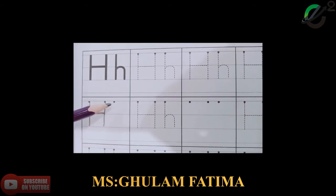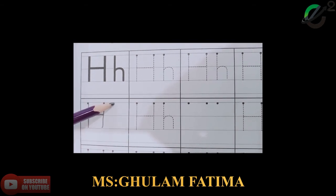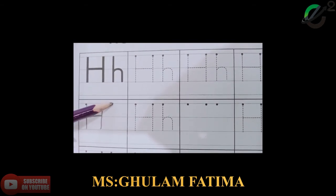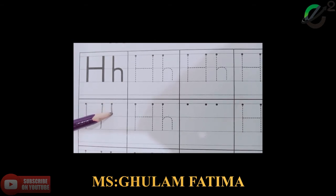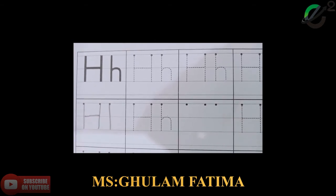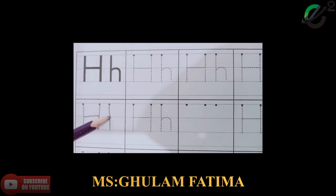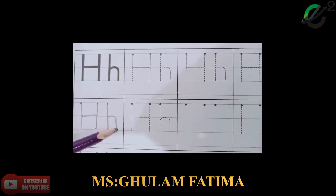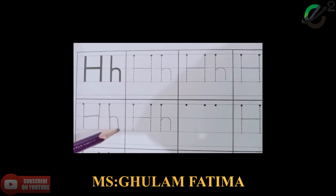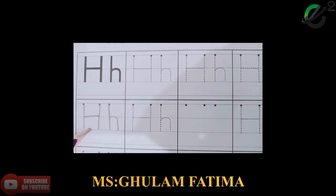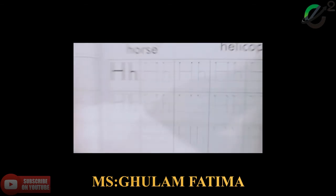Now we will draw small h. On this dot, first of all, starting from the top, make a standing line to the bottom, go to the middle, and make a curve to the bottom. This is small h. Capital H, small h.